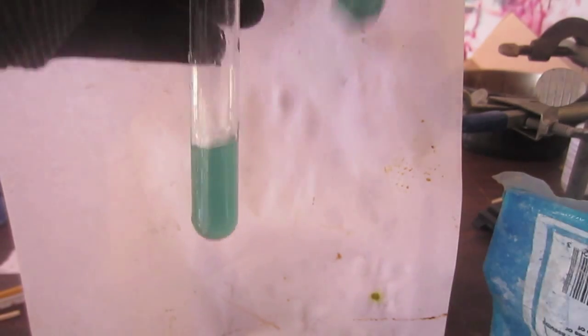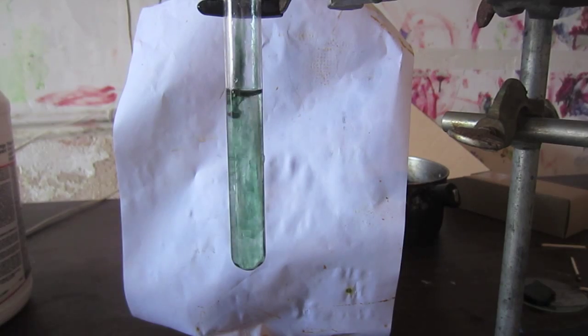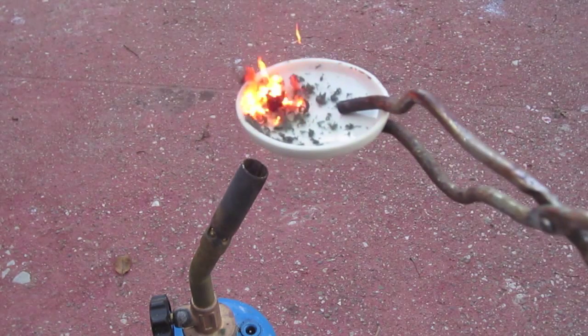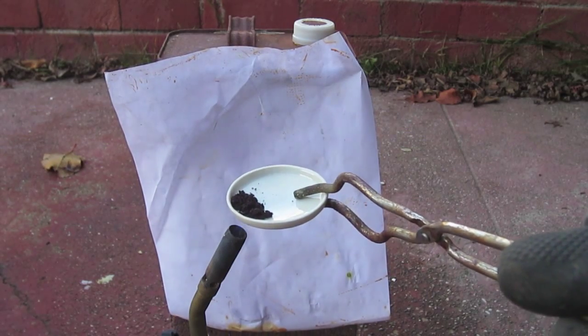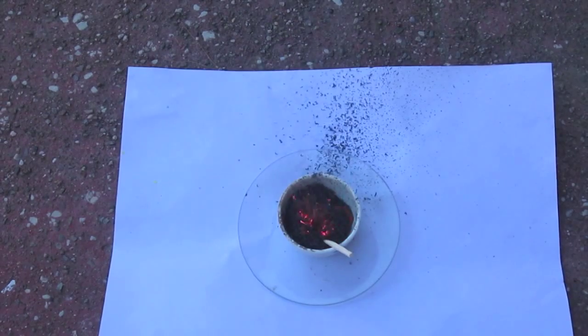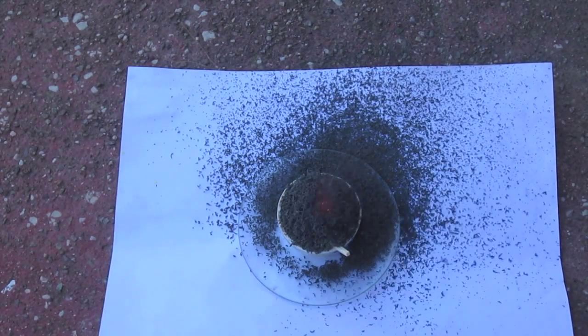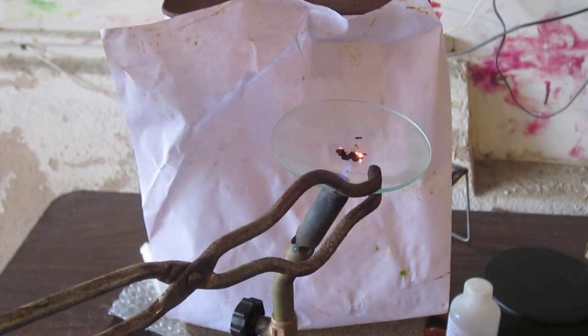All right, now I've shown you chromium in all the major oxidation states that can be easily reached: plus 2, plus 3, plus 4, plus 5, and plus 6.